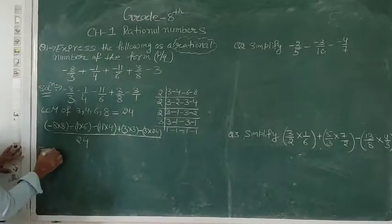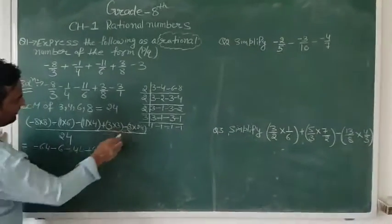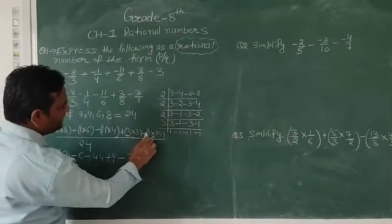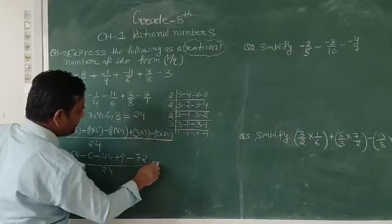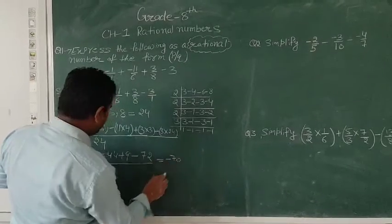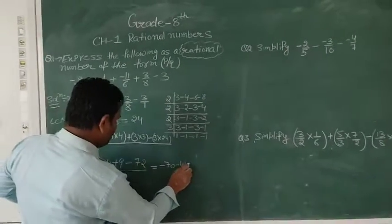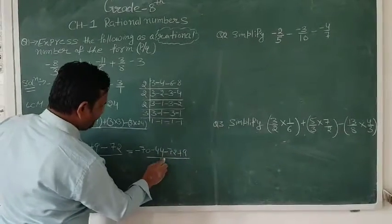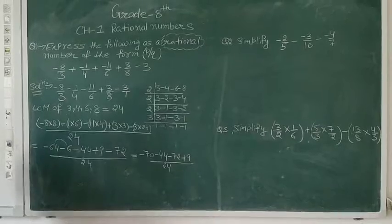So we have: minus 64, minus 6, minus 44, plus 9, minus 72, all divided by 24. Let me solve this properly. The negative numbers are: minus 64, minus 6, minus 44, minus 72, giving minus 186. The positive number is plus 9. I am collecting numbers with the same signs together.